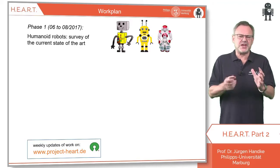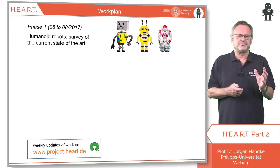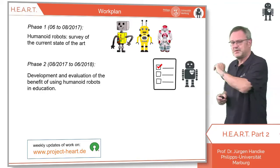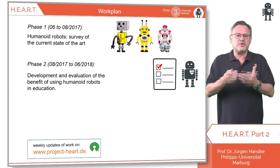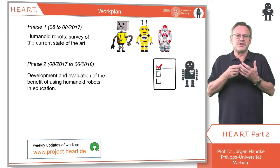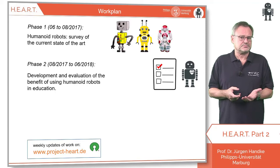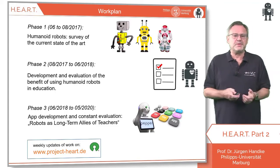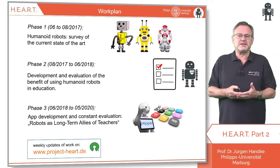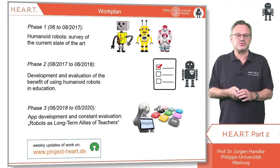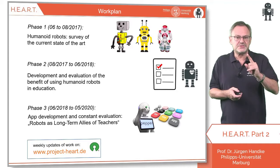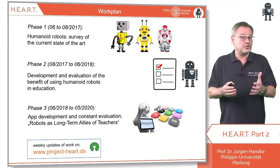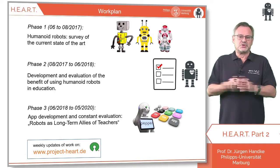In a first phase, we looked at the state of the art and found out that humanoid robots are scarcely used in our societies. Now we have reached phase two, where we have been developing several robot apps ready to be tested in class. In a third phase, we want to make available those apps that have been evaluated as beneficial by our students.